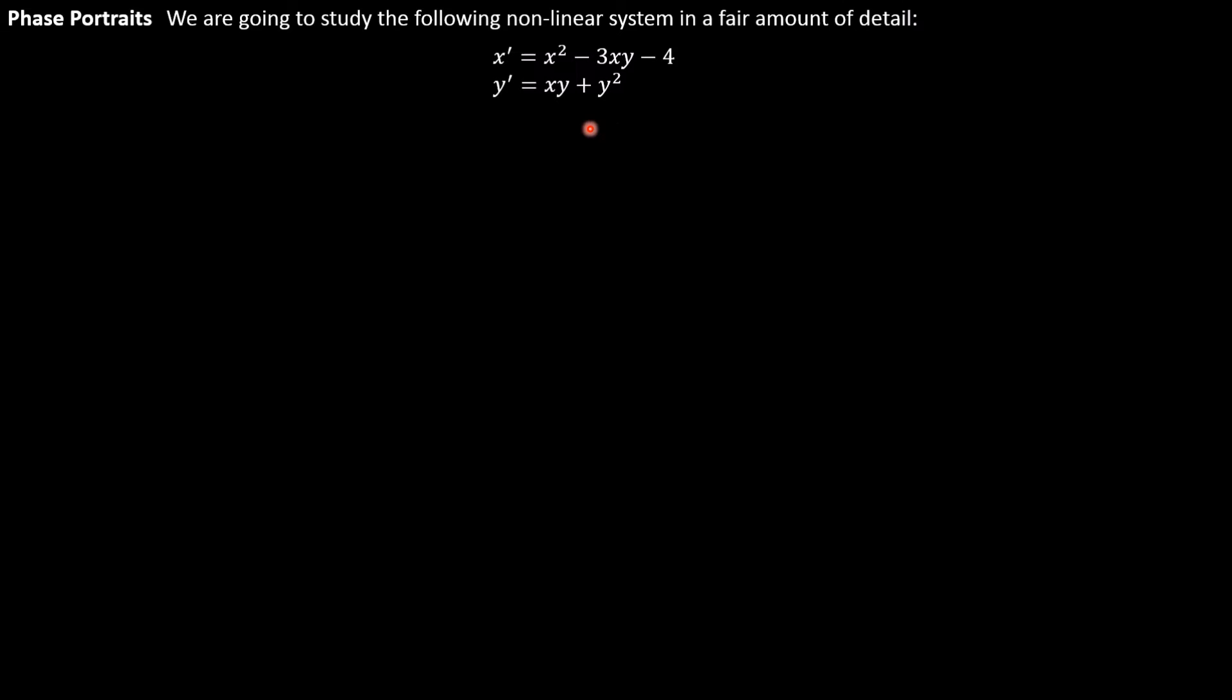I have a linear system here. Actually, it's not linear. It's nonlinear now. That means we have x squared terms and xy terms, y squared terms. Anything that isn't x by itself or y by itself is called a nonlinear term. When you have nonlinear terms, the system of equations becomes much more difficult to study.